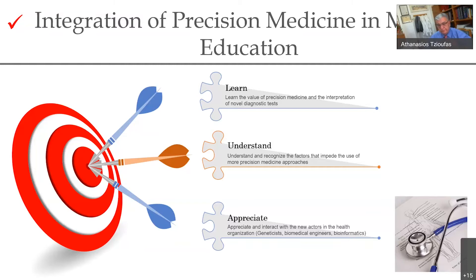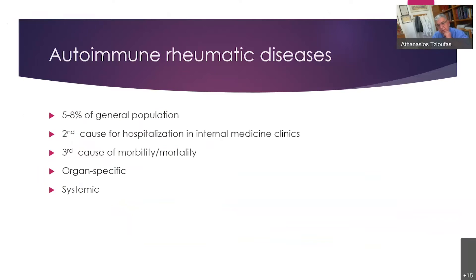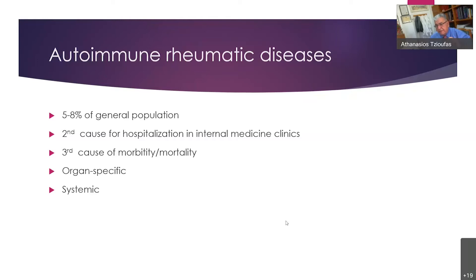My field is autoimmune rheumatic diseases. They affect around 5–8% of the general population, yet they constitute the second cause for hospitalization in internal medicine clinics and the third cause of morbidity and mortality. They can be divided into organ-specific diseases — where only one organ is affected, such as thyroiditis or type 1 diabetes — and systemic diseases where many organs are affected, such as systemic lupus erythematosus.